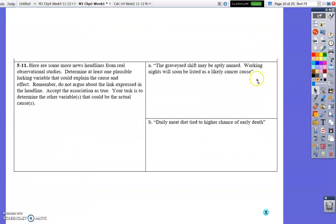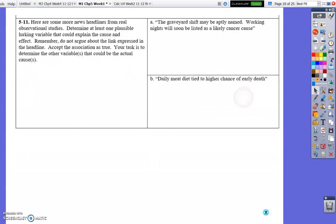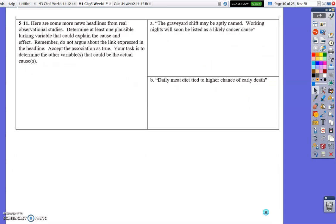Moving on. Some news headlines from real observational studies determine at least one plausible lurking variable that could explain the cause effect. We aren't arguing about the link expressed in this headline. We're accepting that there is a relationship, but we don't think there's causation. So, we want to figure out what might be actually the cause. And so, the graveyard shift may be aptly named. Working nights will soon be listed as a likely cancer cause. So, what might actually be the cancer? So, graveyard just means the working at night. And so, why would working at night cause cancer? Something to think about. What could be the actual lurking variable there?